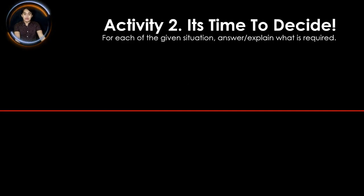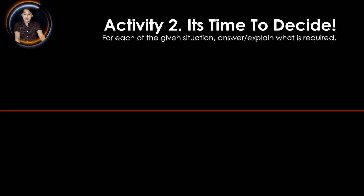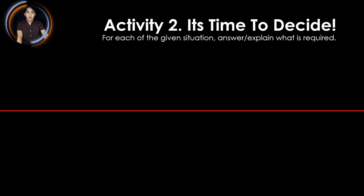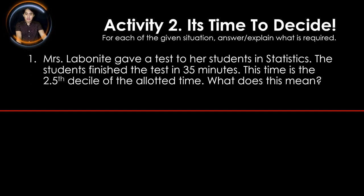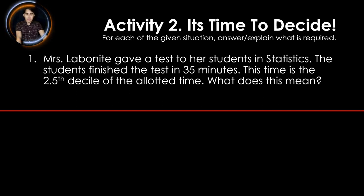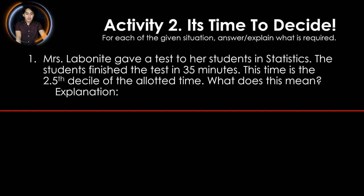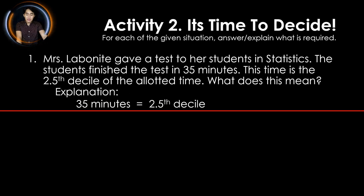Let us have another activity called 'It's Time to Decide.' For each given situation, answer or explain what is required. The first situation: Mrs. Labonete gave a test to her students in statistics. The students finished the test in 35 minutes. This time is the 2.5 decile of the allotted time. What does this mean? Take note that 35 minutes is equal to the 2.5 decile, and the 2.5 decile is equal to 25% of the time.